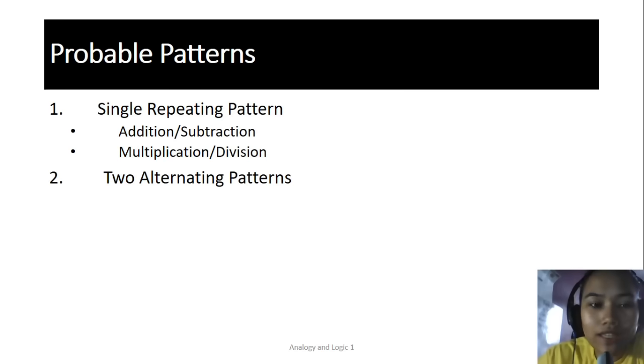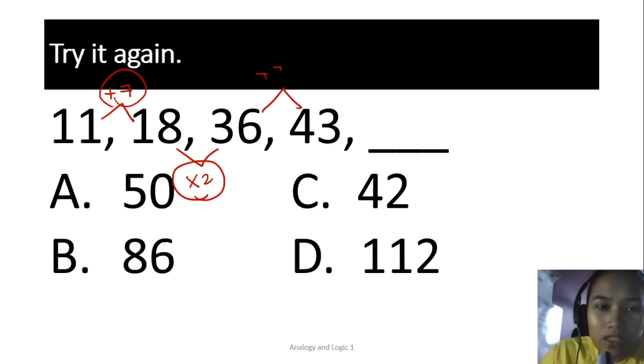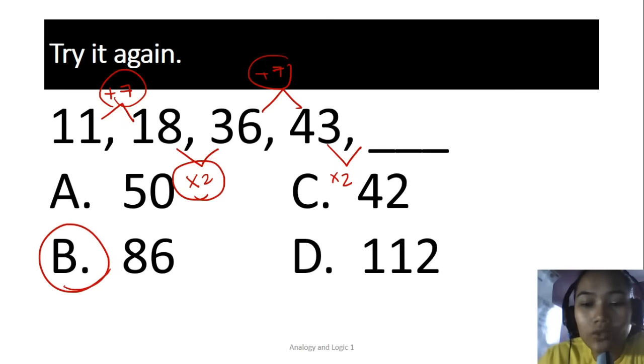That's our two alternating patterns. This also often appears. So I want you to try again. Hit pause now. Let's see how you did. So 11, 18, 36, 43. So 11 to become 18 is plus 7. 18 to become 36 is times 2. Again, I put it on top, this on bottom. So top, bottom, top. This should be plus 7, which is correct. So this should be times 2. So 43 times 2 is 86. Since there's no next number, we don't need to check. The answer is 86. I hope you got that right. That's two alternating patterns.